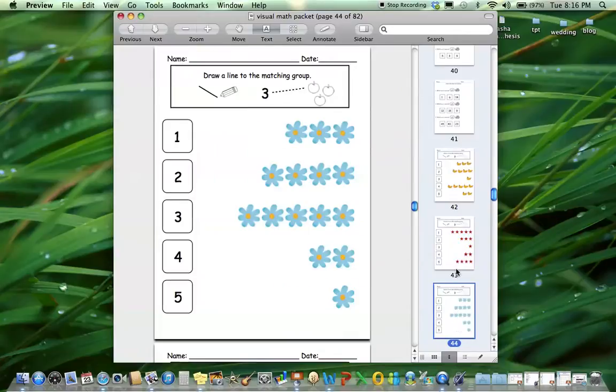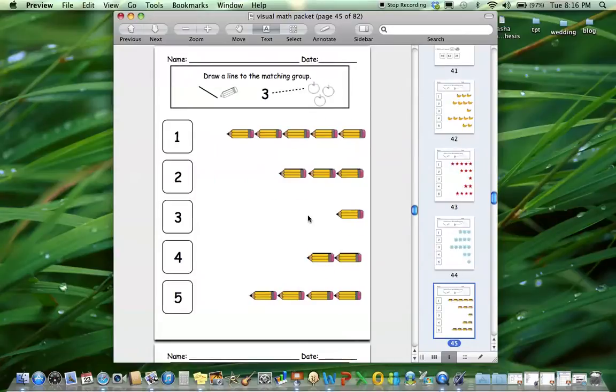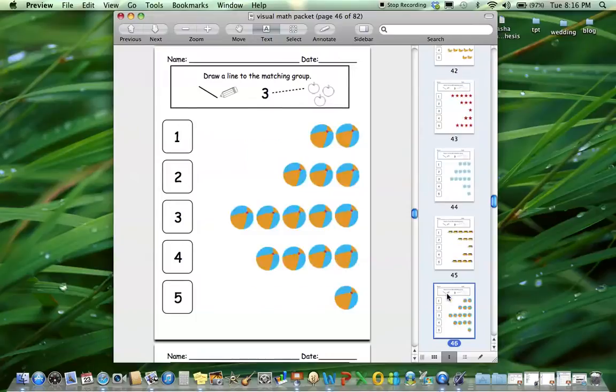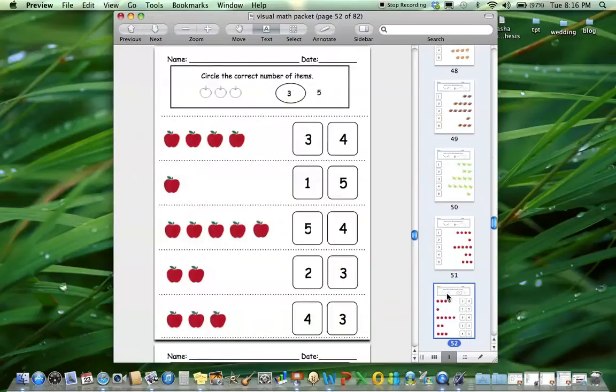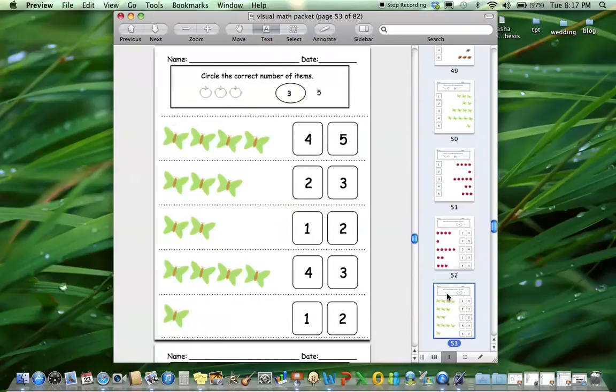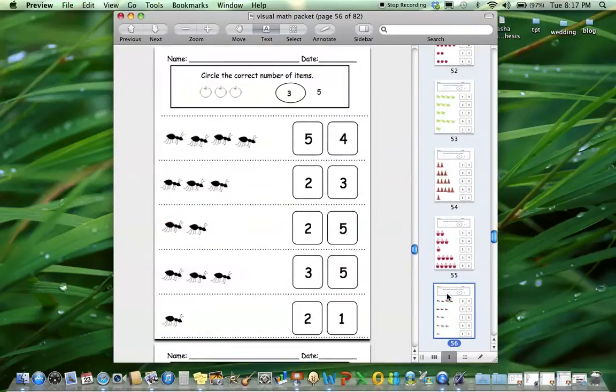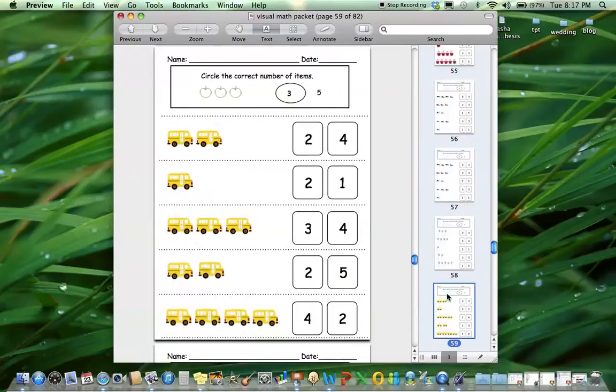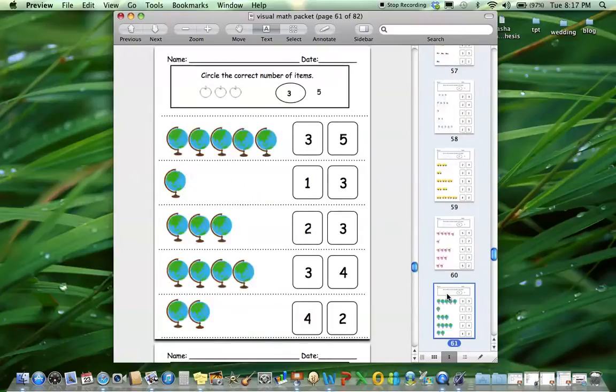Now there's ten different matching to the number, so identifying the number and drawing a line to match. The directions are written visually as well so your non-readers will be able to access these tasks. There's ten of those. And then there's ten of these circling the correct number. I might be laminating some of these in a binder to have for my kids to reuse for a workstation task.